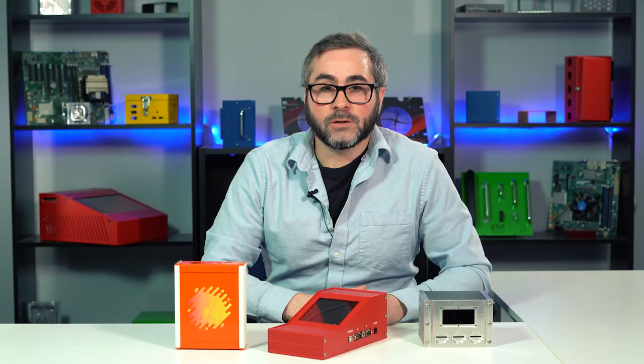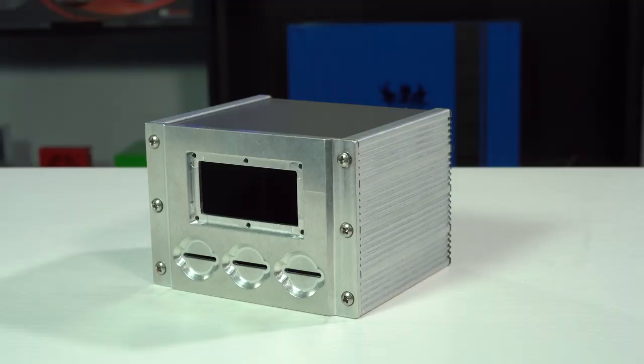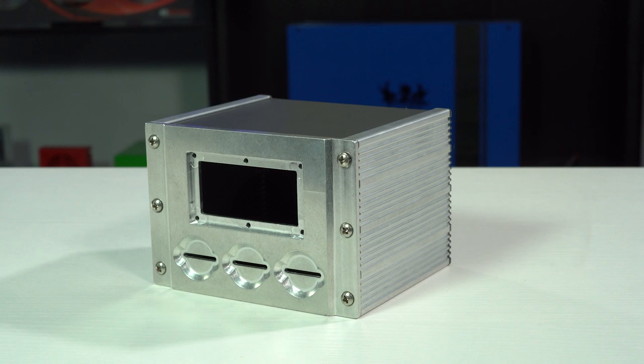For an even more durable enclosure and a more sophisticated look, our hybrid enclosures are a good option. These enclosures use a combination of extruded sides, a sheet metal top and bottom panel, and a custom machined front and back plate. These machined panels offer increased sturdiness, and offer features like pockets, grooves, and chamfers since they're cut on our CNC machines.